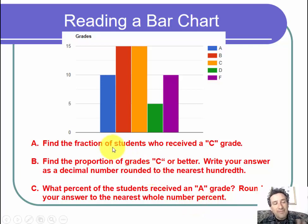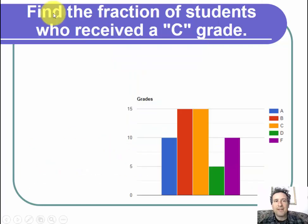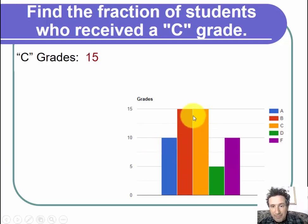So let's first look at part A. Find the fraction of students who received a C grade. We have this bar chart. We want to look at the fraction who received a C. We need to look at the C's and make a fraction of the total. If we look at the C's, we see that bar goes up to the number 15, so there were 15 C grades.